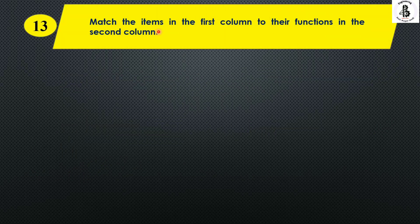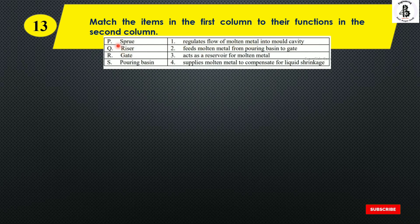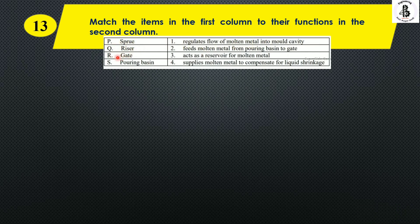Match the items in the first column to their functions in the second column. P is sprue, Q is riser, R is gate, and S is pouring basin.